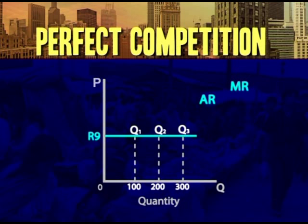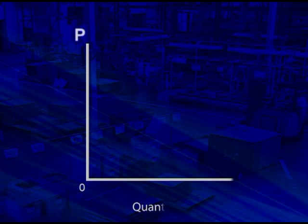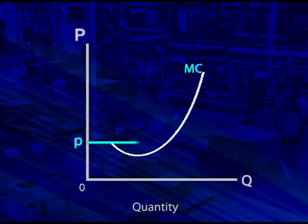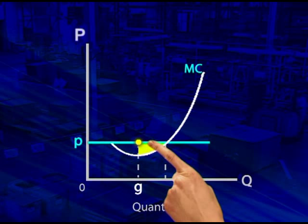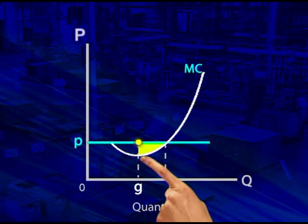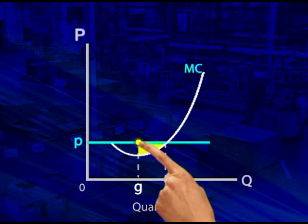Let's see why this is indeed the profit maximisation position. If the firm produces at a point to the left of this intersection, say at point G, the marginal revenue curve is above the marginal cost curve. This means that the firm can afford to produce more, because the extra revenue from each additional unit is still greater than the extra cost of producing that unit.